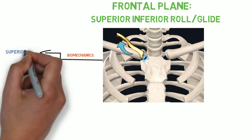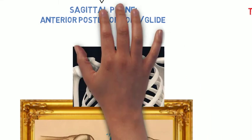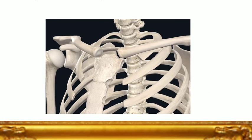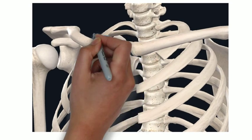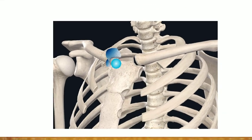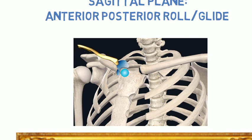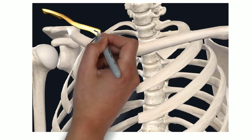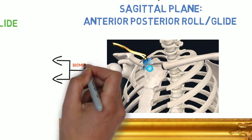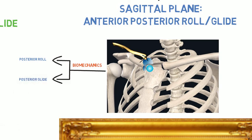In the sagittal plane, the clavicle moves in anterior and posterior directions. Now, in the sagittal plane, the joint surface of the proximal clavicle is concave and the manubrium is convex. That means that the roll and glide will occur in the same direction. So for upper extremity elevation, the proximal clavicle will roll posteriorly and glide posteriorly. Sagittal plane biomechanics: posterior roll, posterior glide of the clavicle on the manubrium.